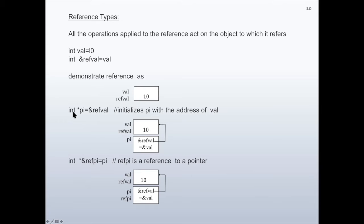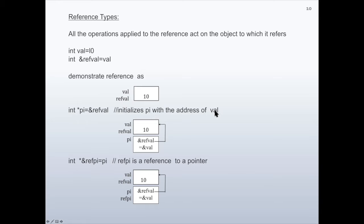If we write integer pointer pi, initialized with the address of ref1, because the address of ref1 and 'w' are the same — in fact they are representing the same integer stored in memory — this line initializes pi with the address of 'w'.